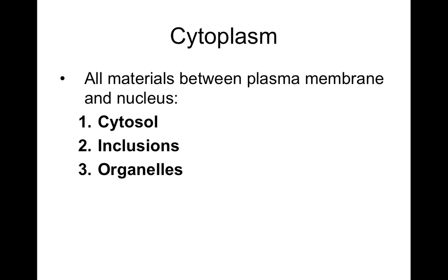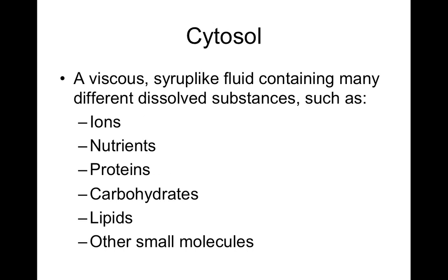Cytoplasm is all of the internal material of the cell — a gelatinous, protein-like substance. Cytoplasm includes three specific components: cytosol, inclusions, and organelles. Cytosol is the watery portion of the cytoplasm, mostly made of water with dissolved substances: ions, nutrients, proteins, carbohydrates, lipids, and other small molecules — like a nutrient shake. These substances make it less watery and more viscous, kind of syrupy. If you could pour cytosol out of a glass, it would pour like a syrupy solution.